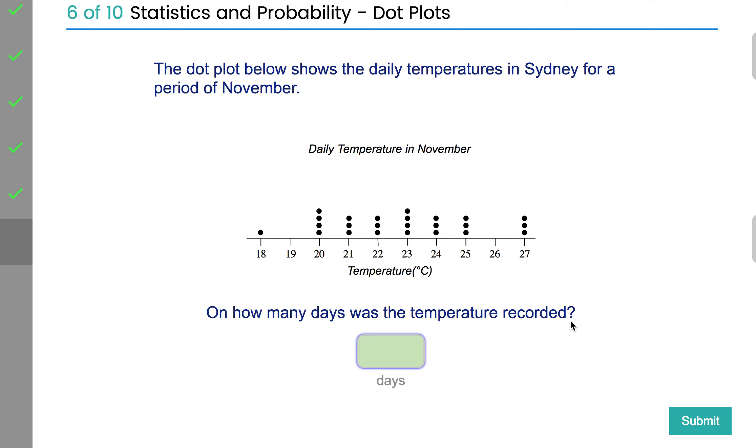On how many days was the temperature recorded? That's all the dots added up together. So you've got one and four is five, three more is eight, three is eleven, four is fifteen, three is eighteen, three more is twenty-one, and three more is twenty-four. So there are 24 days of temperature.